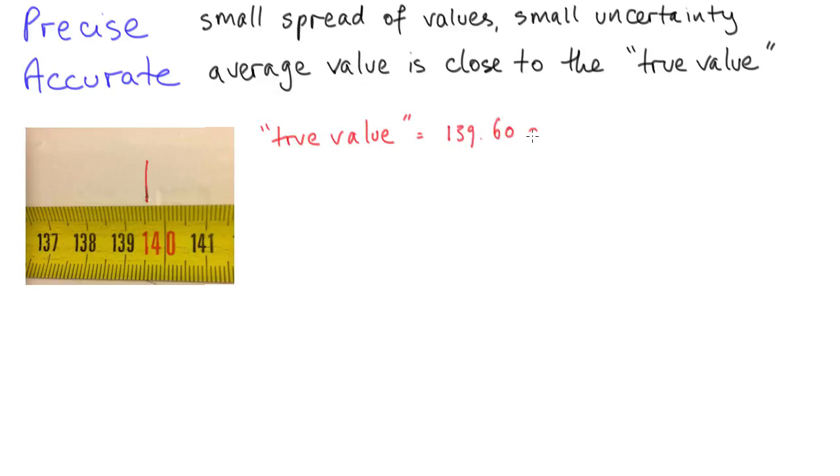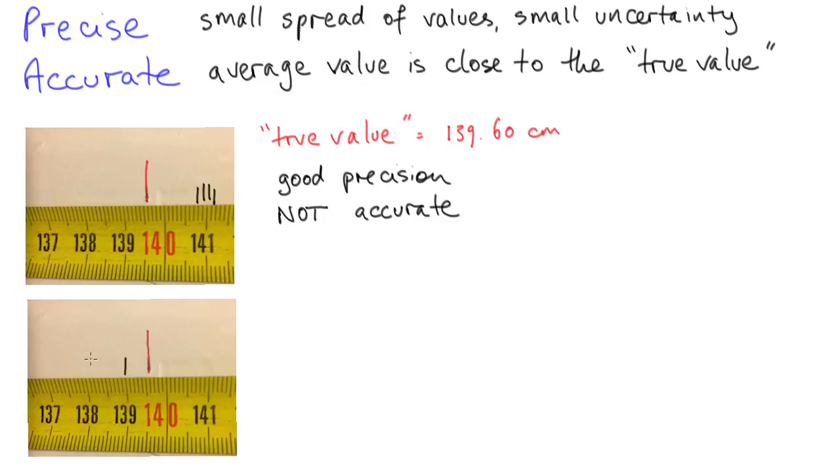Now precision and accuracy are not the same thing. It's possible to have experiments that are very precise but not accurate, and others that have low precision but where the average of many measurements is spot on the true value.